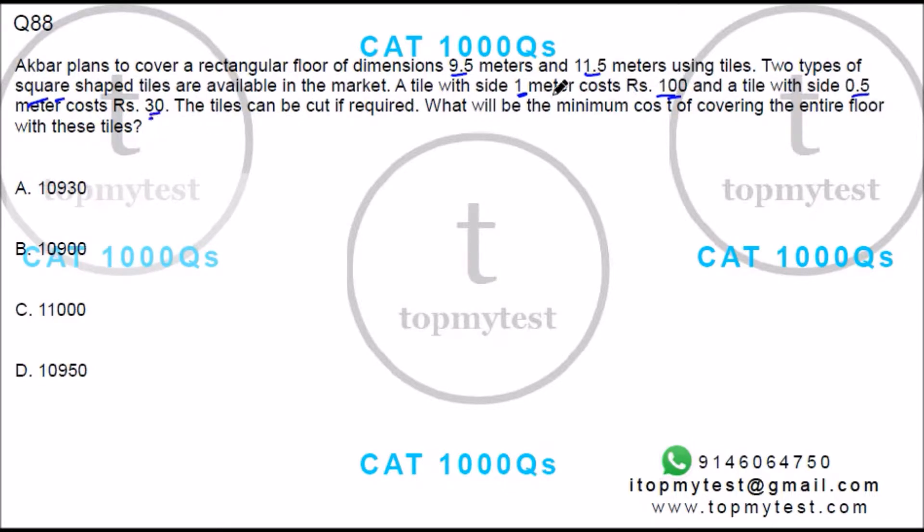So per square meter charge here will be 100. Here for one-fourth of a square meter you'll have to pay 30, so obviously this is the cheaper tile. I will try to use it as much as possible. The tiles can be cut if required. What will be the minimum cost of covering the entire floor?